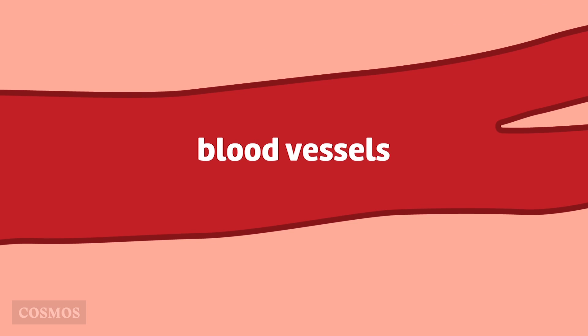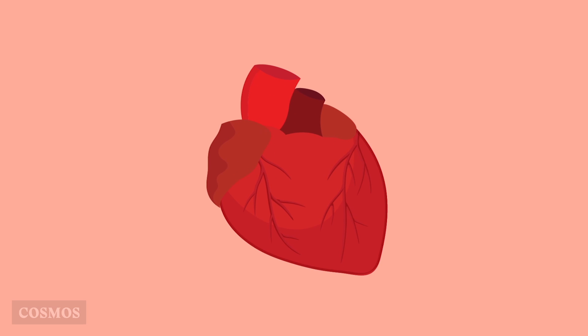The blood flows through a system of branching tubes called blood vessels, of which there are three types. Arteries carry blood away from the heart, while veins carry it back.